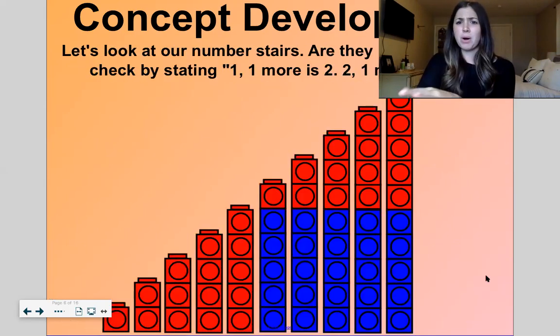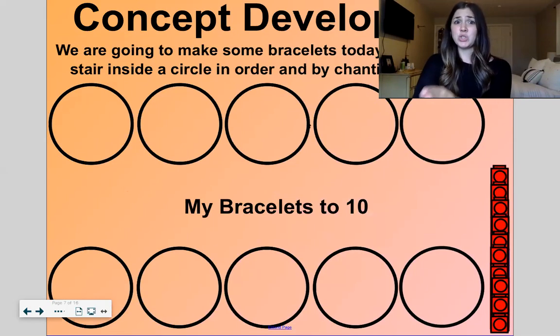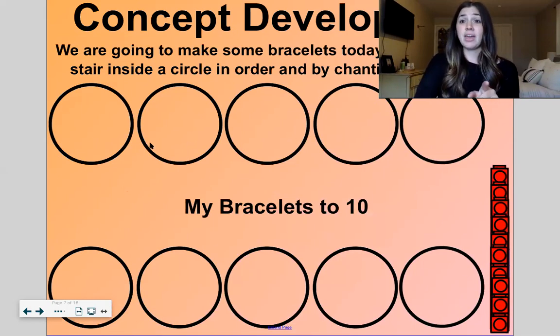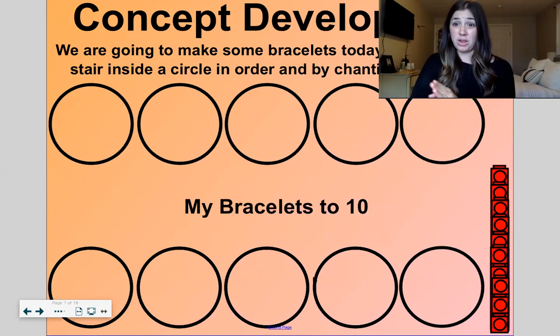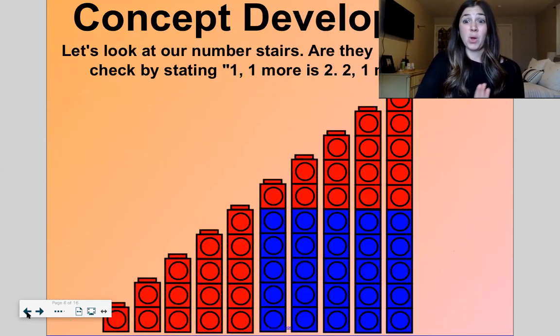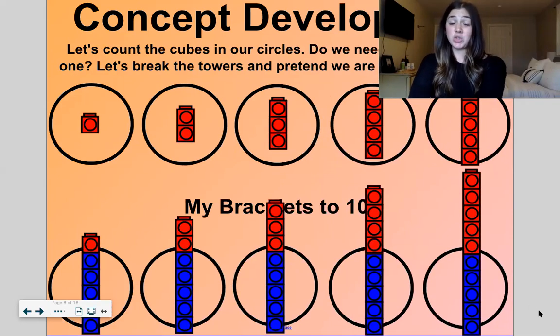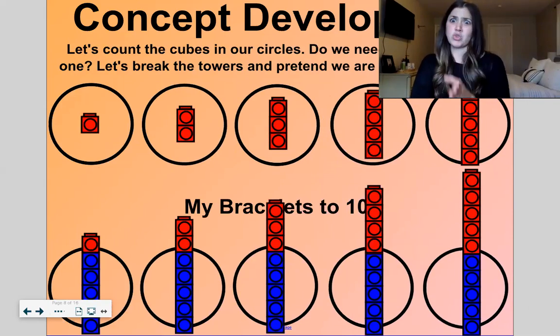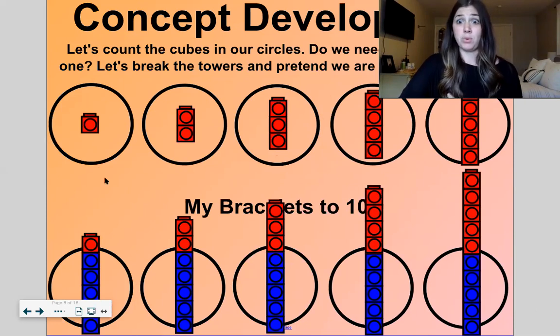So now let's take apart this big tower. We're going to take it apart. We're going to put it into these bracelets. We'll take off one stair and we'll put it inside a circle. Then we'll put them in order from one through ten. So let me speed this up for you and show you what it looks like when it's done. There we go. So let's count the cubes in our circles and let's count the one more way.